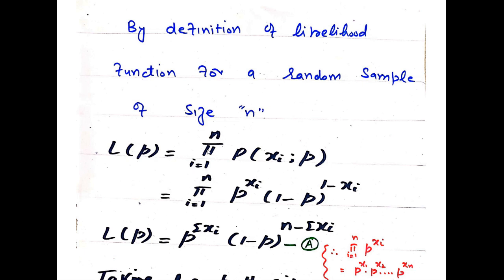For example, if we have a random variable x with a product like x1 · x2 · ... · xn, we use Pi notation. For addition, we use summation or sigma notation.